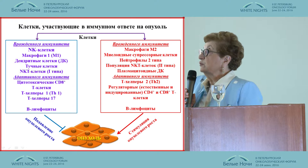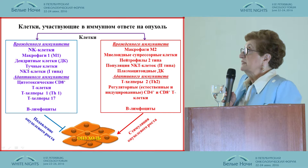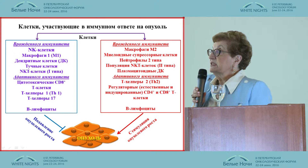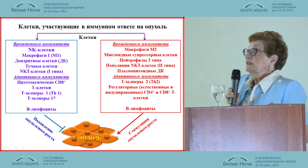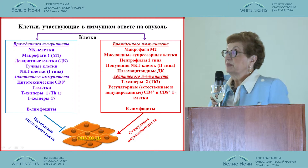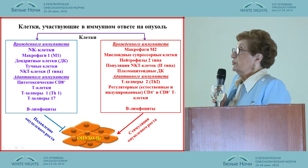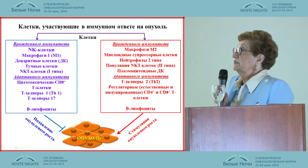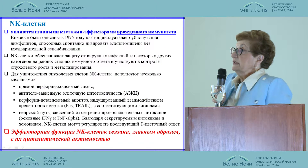As for suppressor cells: macrophages of the second type, myeloid cells, neutrophils of the second type, and plasmacytoid cells. In adaptive immunity, cytotoxic CD8 cells and T-helpers of the first type and B lymphocytes are responsible for immune response, while suppressor action includes helpers of the second type, regulatory cells, and naturally induced cells.